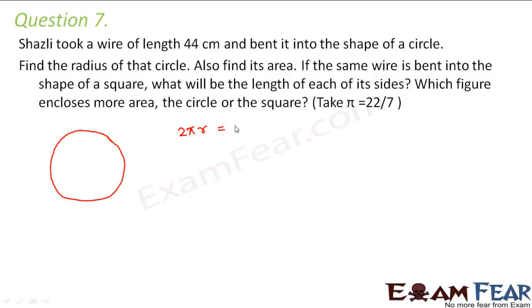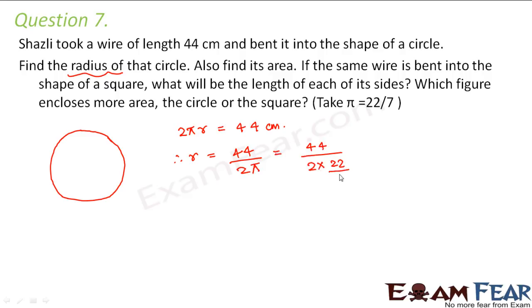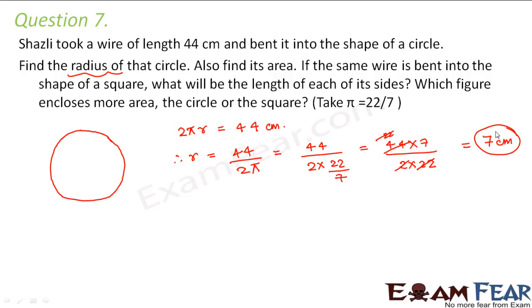So circumference of the circle is 2πr. Since 2πr = 44 centimeters, we have to find the radius of the circle. r = 44 ÷ 2π. Taking π as 22/7, this gives r = (44 × 7) ÷ (2 × 22). The 22s cancel, giving r = 7 centimeters. Therefore, the radius of the circle is 7 centimeters.